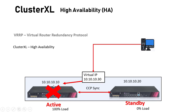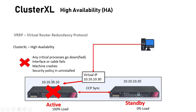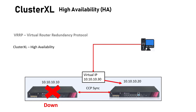If one device goes down — maybe a process crash, something happens to the cable, the machine crashes, or an admin uninstalled a security policy — the virtual IP knows that the device changed status from active to down, and reroutes the traffic to the second device. It becomes active and passes 100% of the load, while the first one drops to 0%.